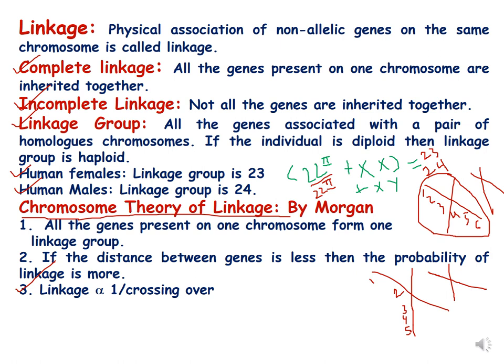If the distance between genes is less, then the probability of linkage is more, and linkage is inversely proportional to crossing over. So more crossing over means less linkage, and less crossing over means more linkage. Linkage is greater when the distance between genes is less, and when the distance between genes is more, crossing over takes place.